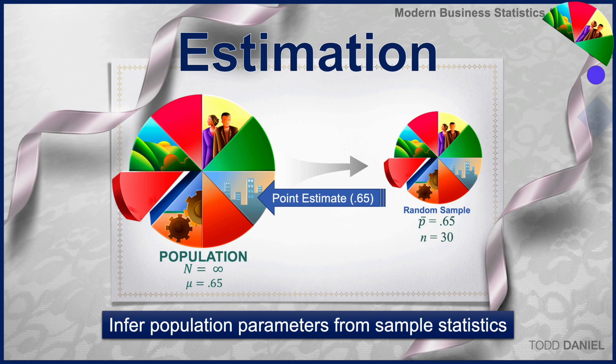We can infer population parameters from sample statistics. The proportion of the sample is the best estimator of the proportion in the population.